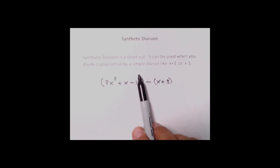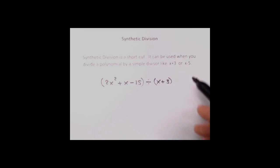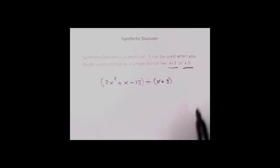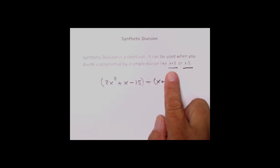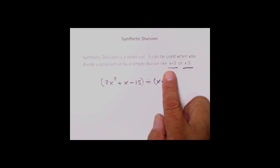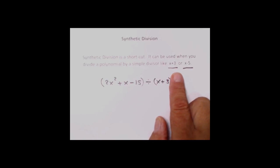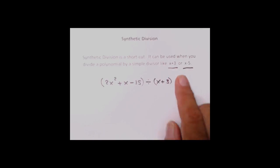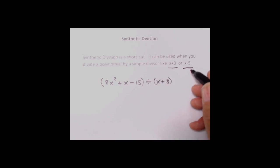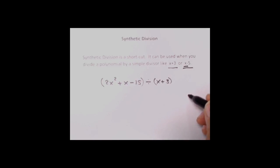Now, as I said, special cases — here's the example: you have to have something like x plus 3 or maybe x minus 5. The idea is that the coefficient of the variable is a plus 1. You couldn't do this with 2x plus 3 or negative x plus 3. It's got to be x plus 3 or x minus 5. It's really designed to go with the x minus, because the minus is what does the subtraction that we do in regular binomial division.